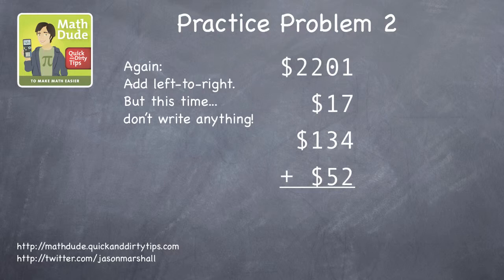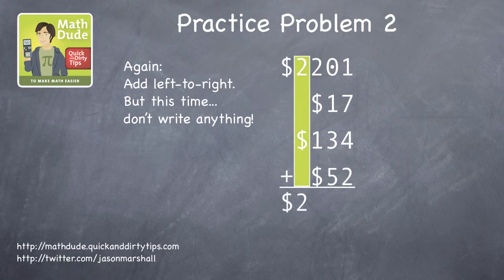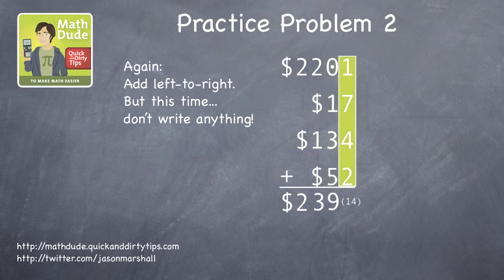Again, the biggest digit is in the thousands, so start there on the left. There are two thousands, three hundreds, nine tens, and fourteen ones.